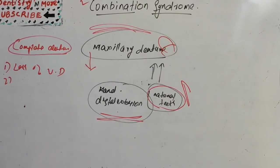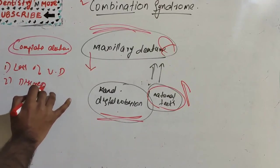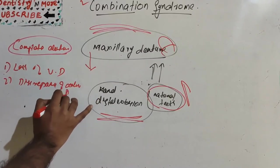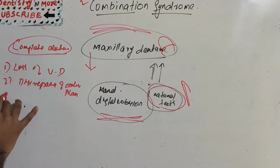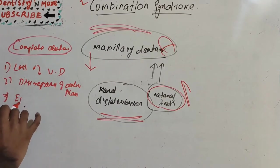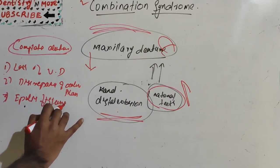Then occlusal plane discrepancy. Then we have anterior spatial resorption of the mandible.